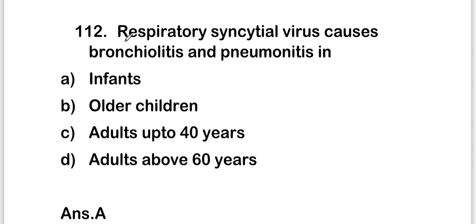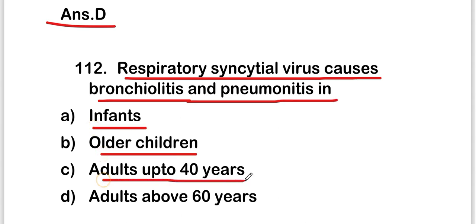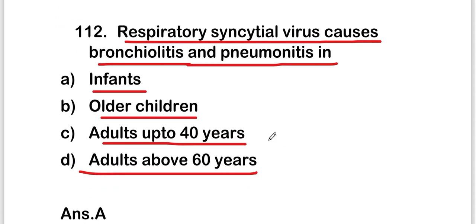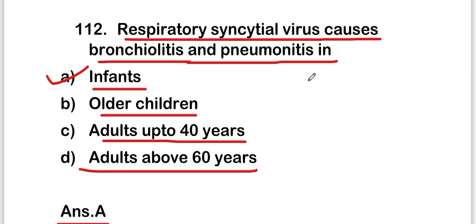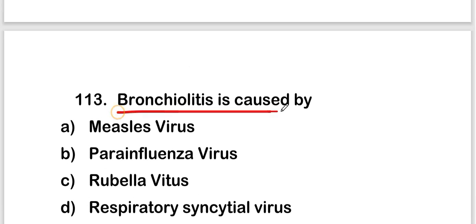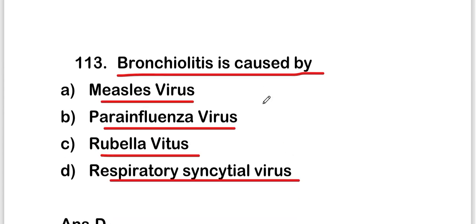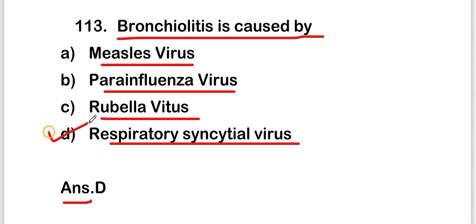The next question is: respiratory syncytial virus causes bronchiolitis and pneumonitis in — infants, older children and adults up to 40 years, or adults above 60 years? The right answer is option A, that is infants. Additionally, bronchiolitis is caused by respiratory syncytial virus.